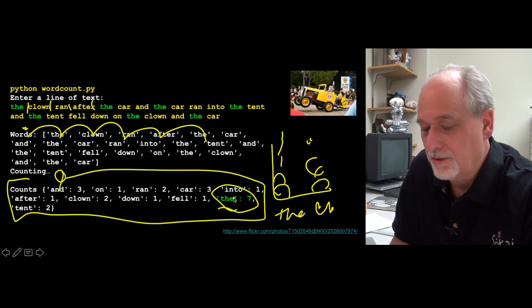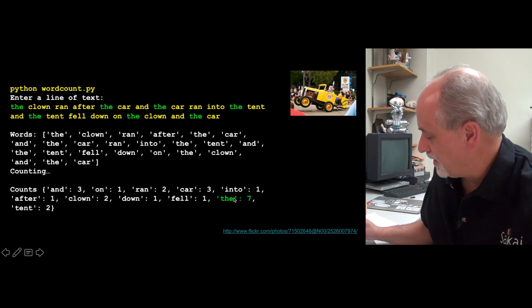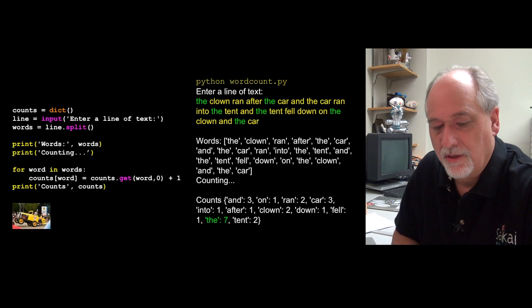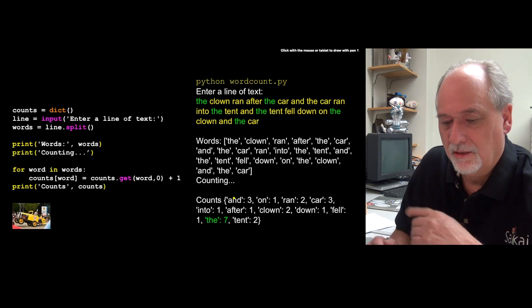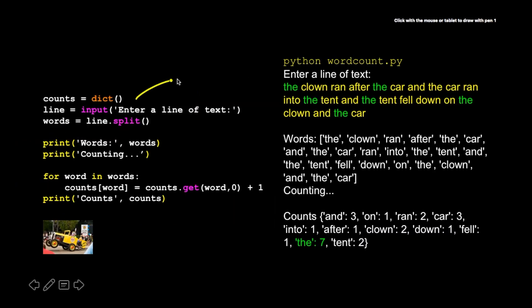And we can, so by inspection, see, oh, the is the most common word and there are seven of those, right? So if we sort of take a look at this, we start out, we make a dictionary, we read in a line of text, the text goes in.